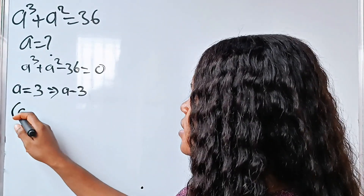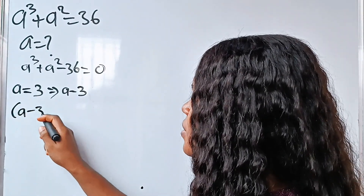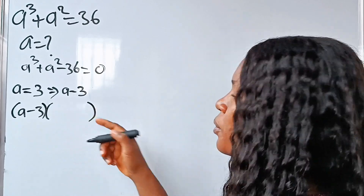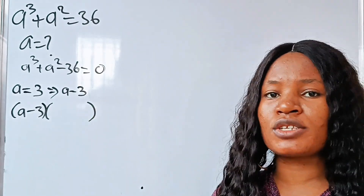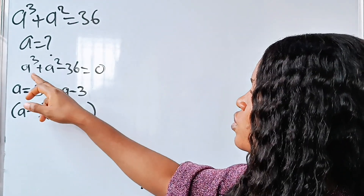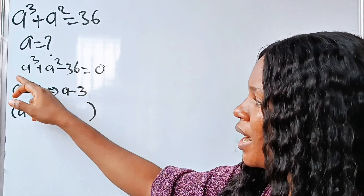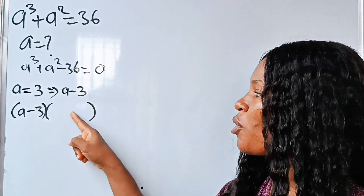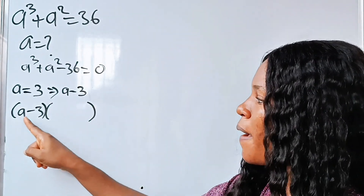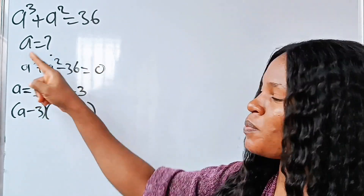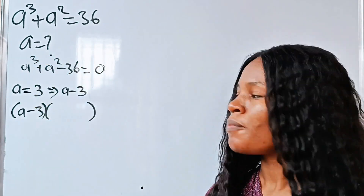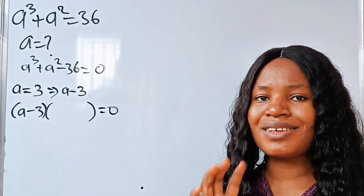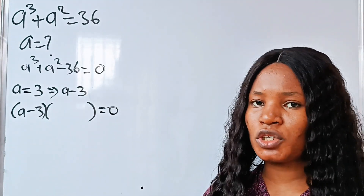Now, a minus 3 is going to multiply another value — a quadratic equation — to get this polynomial back. We need to find that quadratic equation, and the easiest way to do that is to use synthetic division.